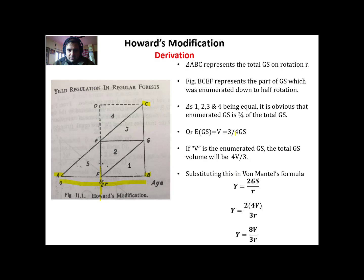On the basis of this, if V is the enumerated growing stock, then total GS = 4V/3. Substituting this into Von Mantel's formula Y = 2GS/R, we get Y = 2(4V/3)/R. So ultimately we get yield Y = 8V/3R.